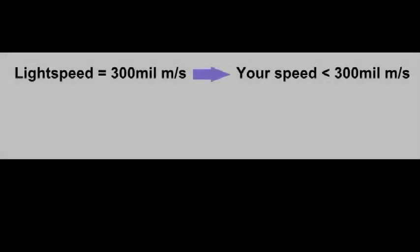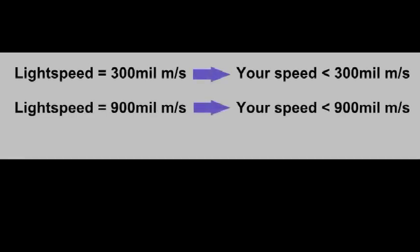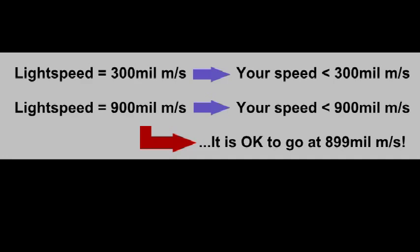For example, if the coordinate speed of light on flat space is 300 million meters per second, then your speed must be less than 300 million meters per second. However, if the coordinate speed of light on warped space is 900 million meters per second, then any speed less than 900 million meters per second is okay for you. You can go 899 million meters per second, or nearly three times normal light speed.